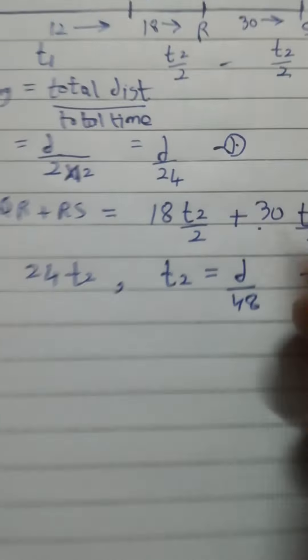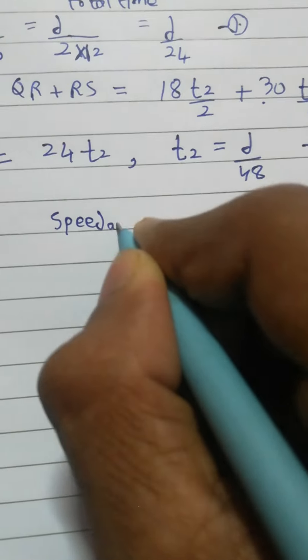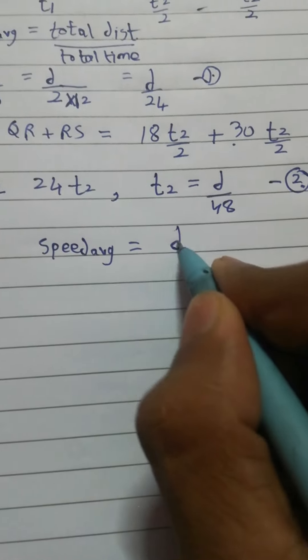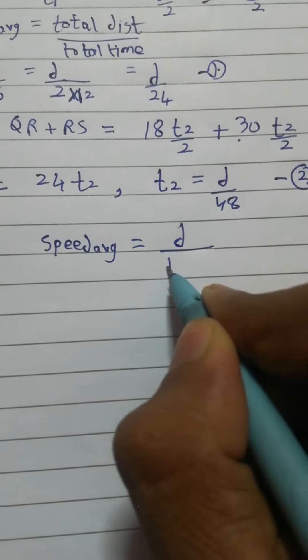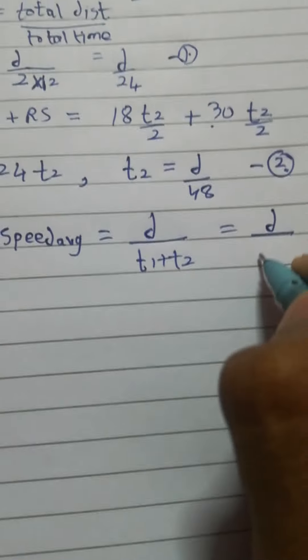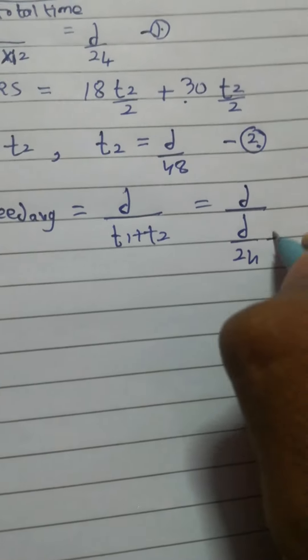So the speed average would be equal to total distance upon total time. So D upon what is total time? T1 plus T2. So this is D by what is T1? From first equation it's D by 24, so D by 24 plus from second equation T2 is D by 48, so D by 48.